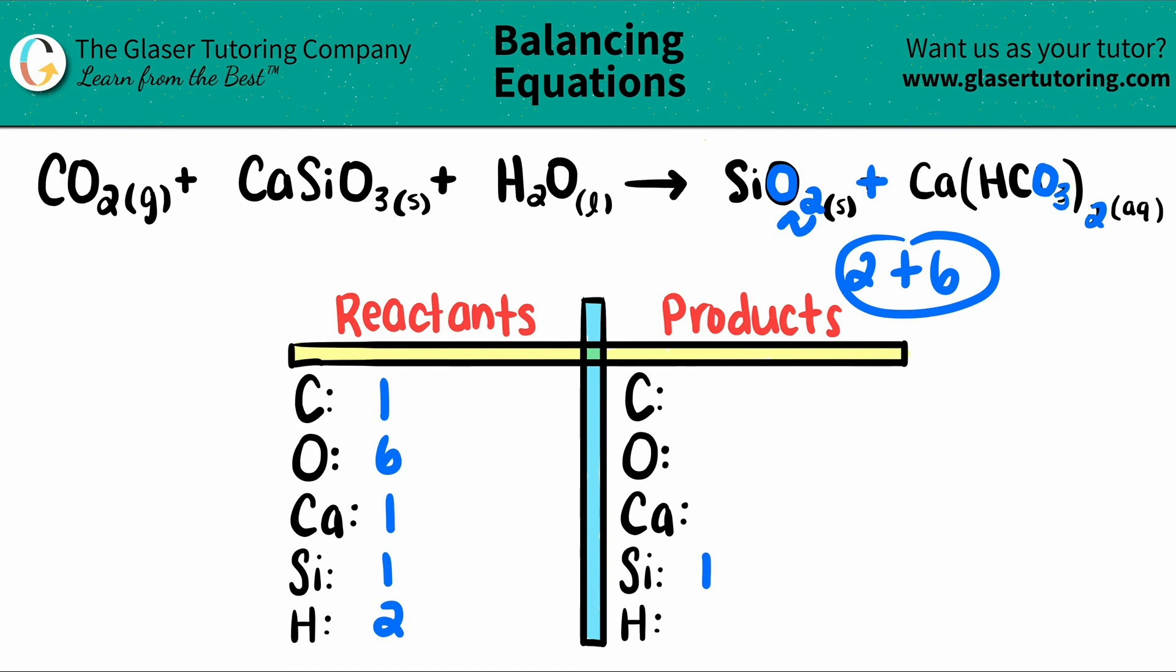Two plus six is eight. So I actually have eight total oxygens on my product side. So put an eight here.